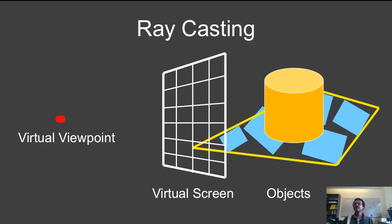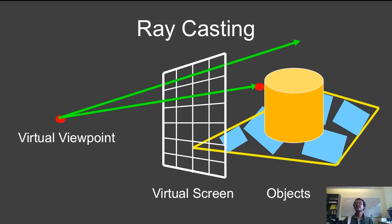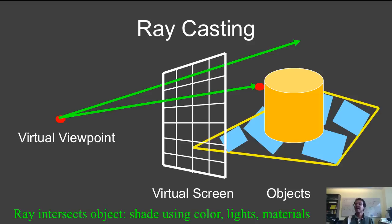Let's talk about the basic ray casting algorithm. The diagram shown here includes a virtual viewpoint corresponding to the camera, your screen, and some objects. What we do is cast a ray for visibility from the virtual viewpoint and see what objects it hits. In this case, the ray misses all of the objects, so the pixel will be colored black. For the next pixel, the ray hits the cylinder, and therefore it will be shaded using the hit point, the color of the object, the reflectance properties, the lights, and the materials.